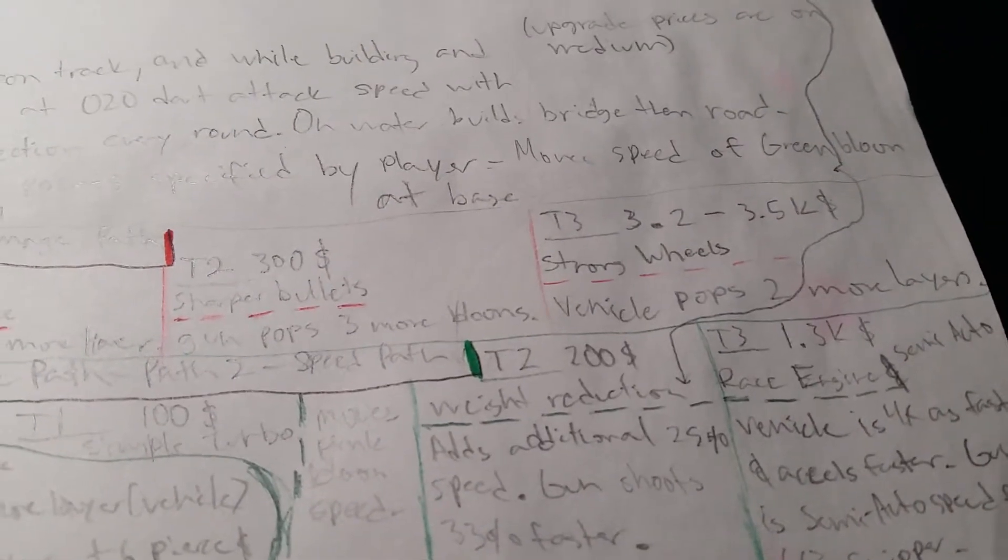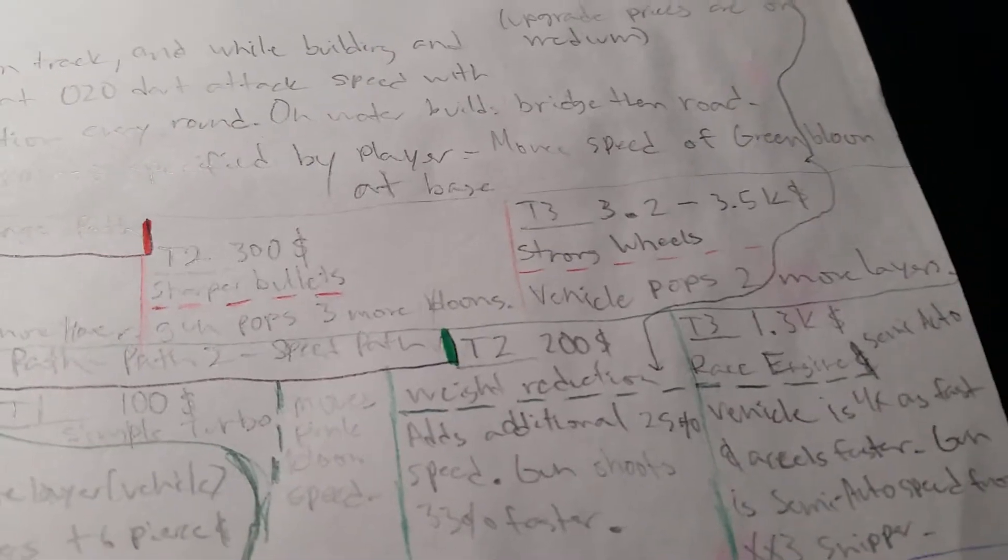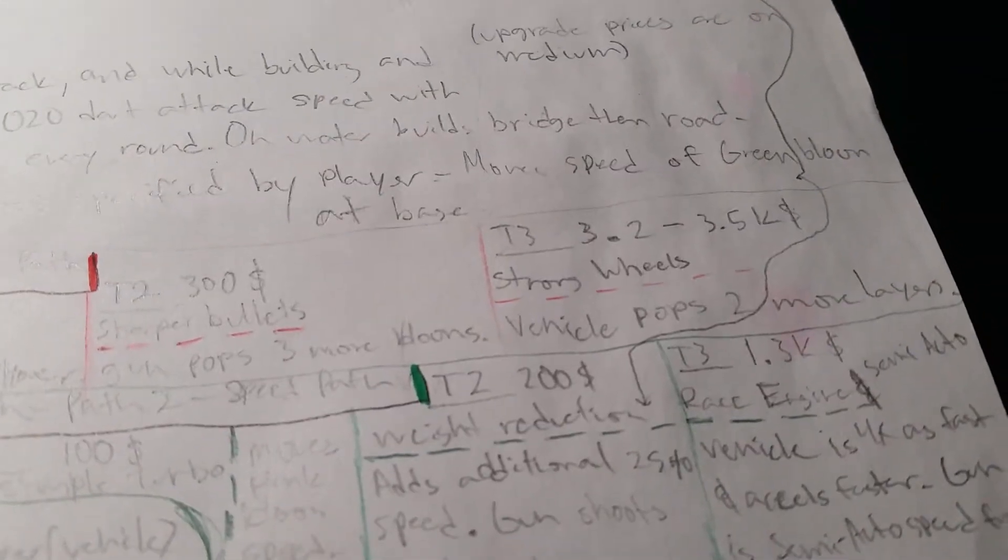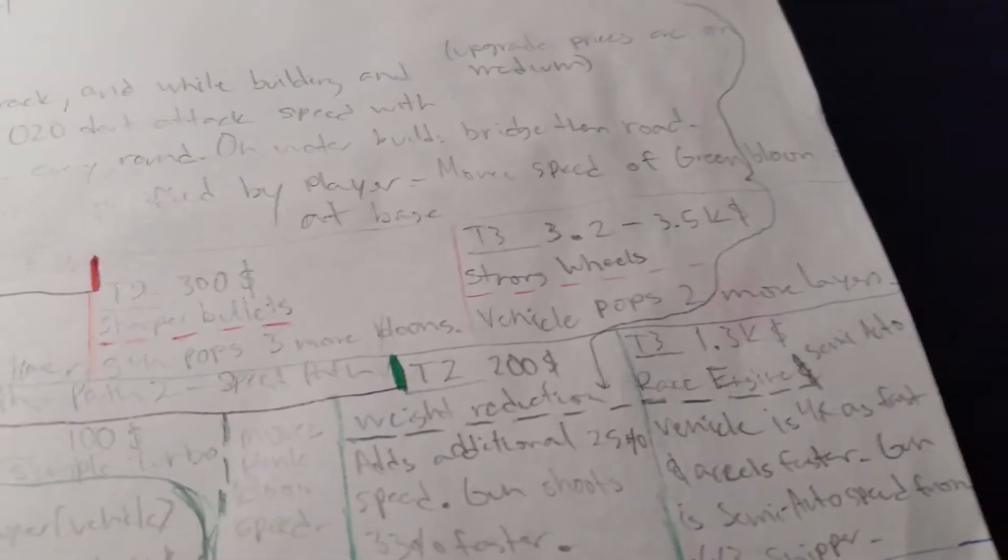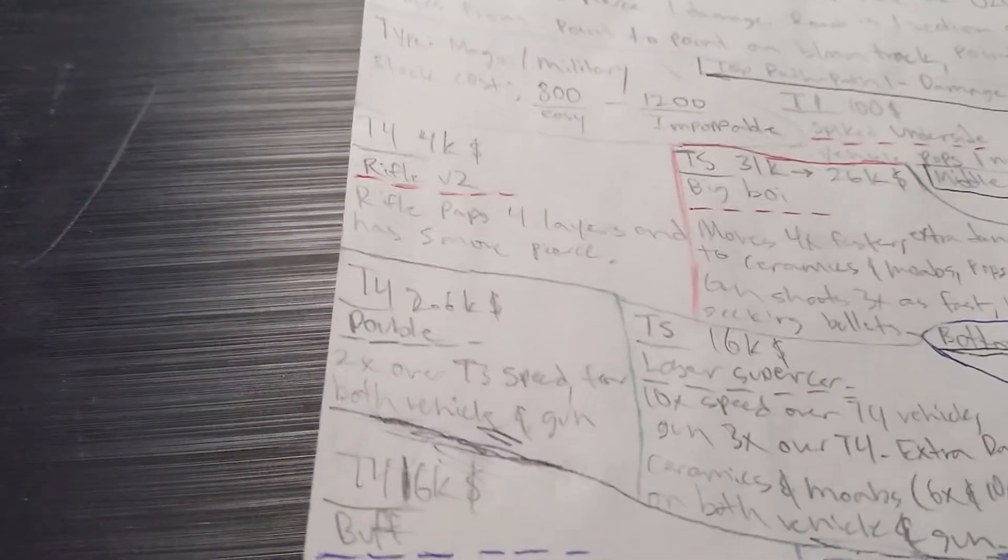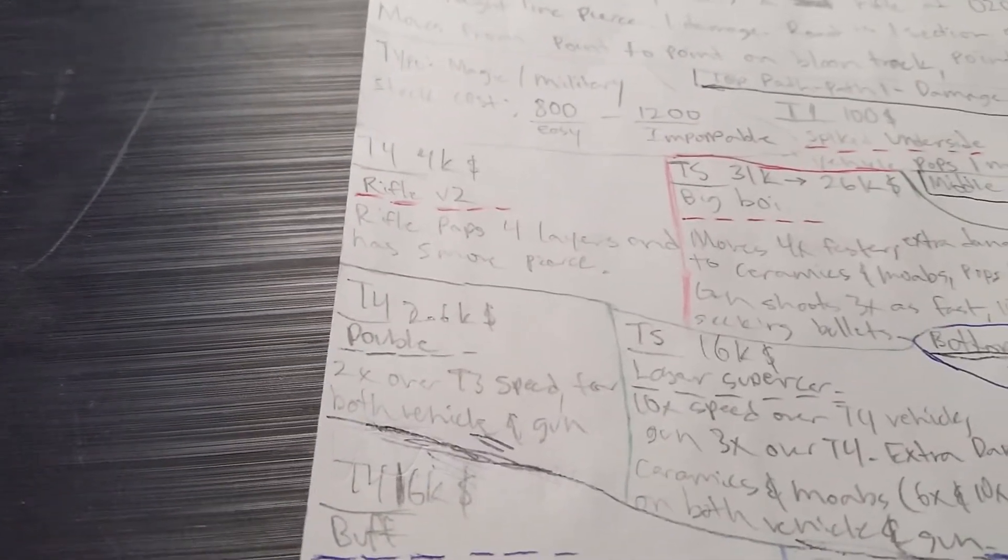Tier 3 is 3,200 to 3,500 dollars, has a range, strong wheels, vehicle pops two more layers. And then tier 4, 4K dollars, rifle V2, the rifle pops four layers and has five more pierce.